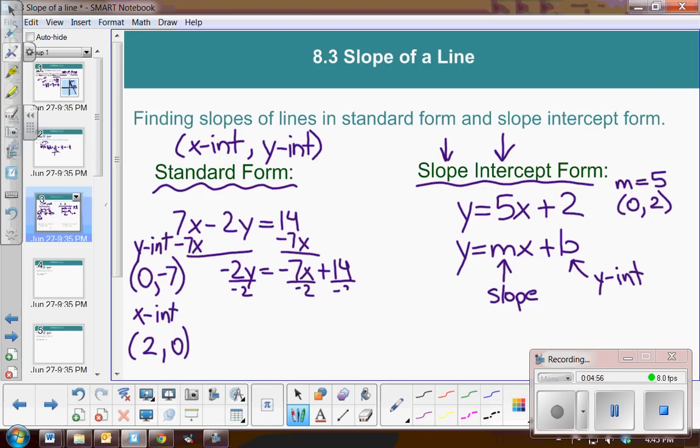I would now be able to easily identify the slope and the y-intercept. Negative over negative is a positive 7 halves x, and then minus 7. So for this example, I could say the slope is 7 halves, and the y-intercept is 0, negative 7.